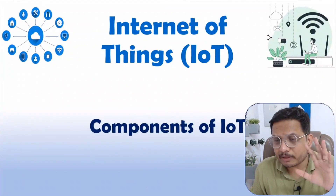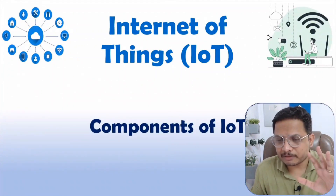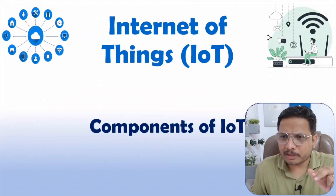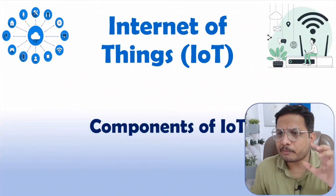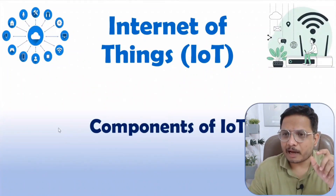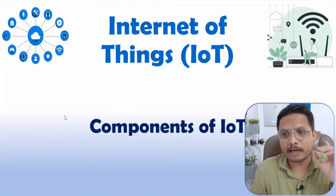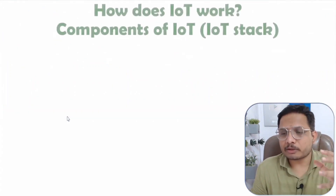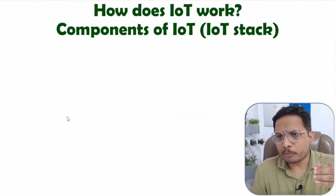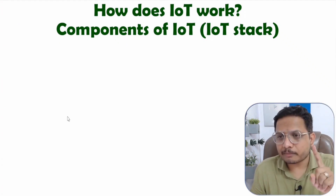There are five major components associated with IoT. I will discuss all the components in great detail. First, let's examine how an IoT system works. To understand how it works, you need to understand the structure of the components. There are five major components of IoT.